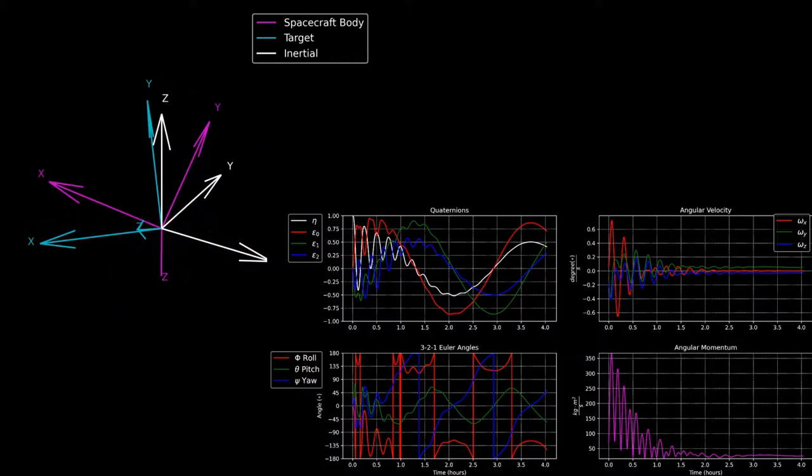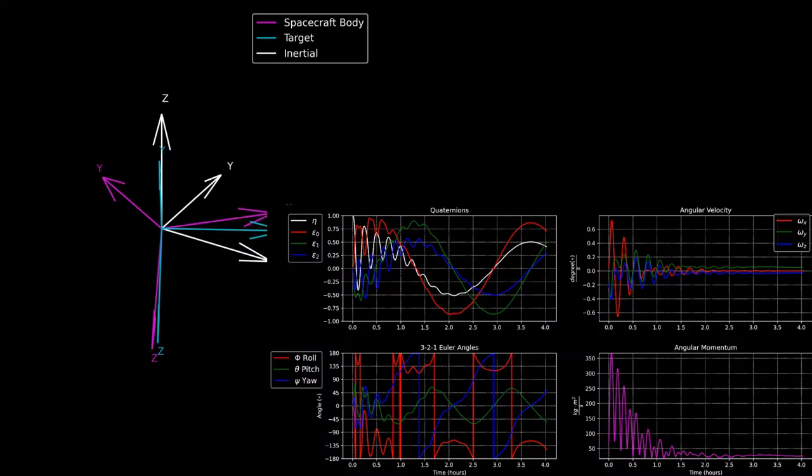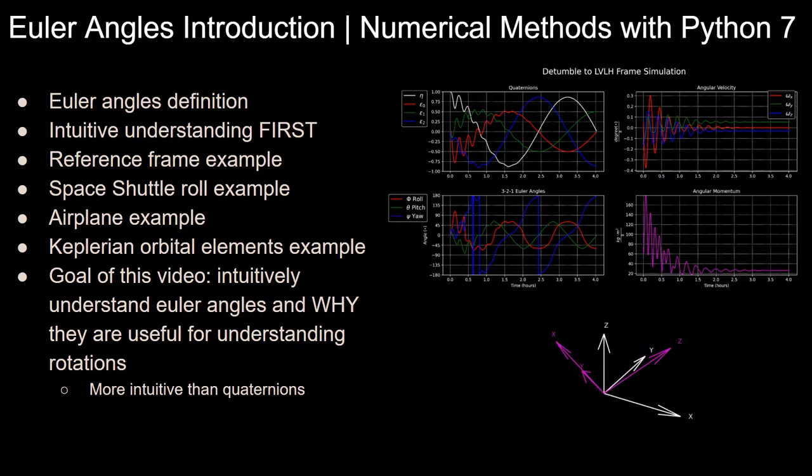Just to show one more example, here's the Euler angle time history for a de-tumbling spacecraft, which I'll be covering further in detail in the spacecraft attitude control with Python series. Make sure you're subscribed to be notified about those future videos.